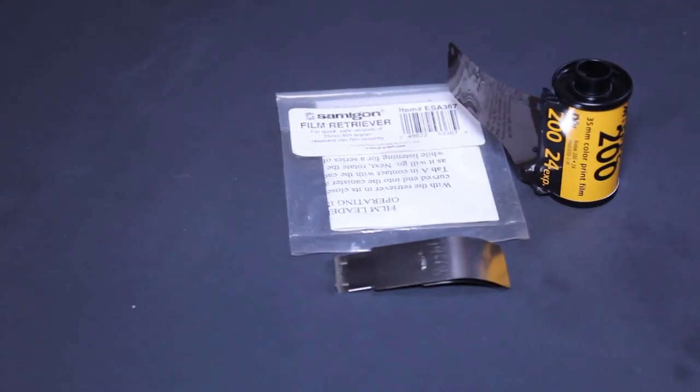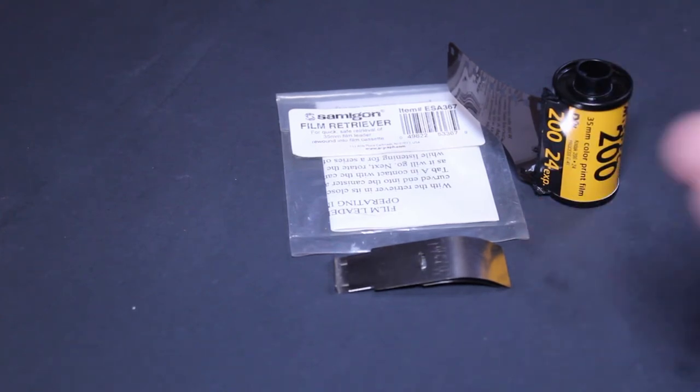That is basically it. That is how that simple little piece of metal works. Again, it's a really useful, really wonderful piece of gear, and I think I only paid maybe three dollars for this thing. I've gotten so much use out of it; it's been an incredibly useful tool. So that's my little review of the Samagon film retriever, a very simple, very straightforward piece of equipment that will help you so much when you're getting ready to develop your films.